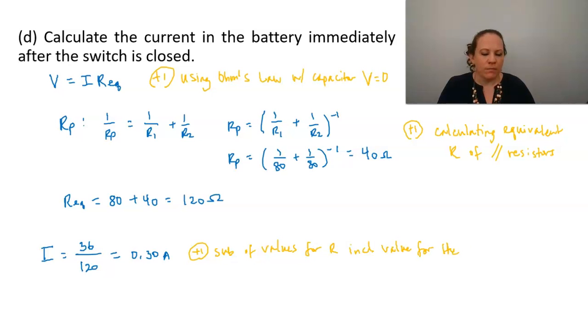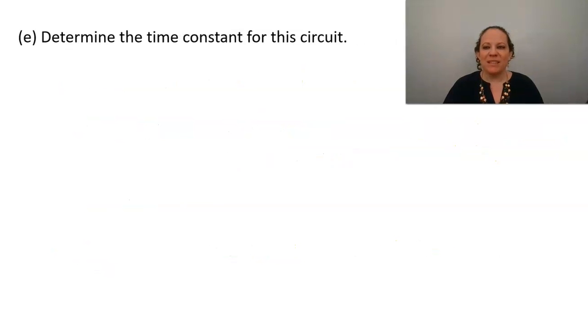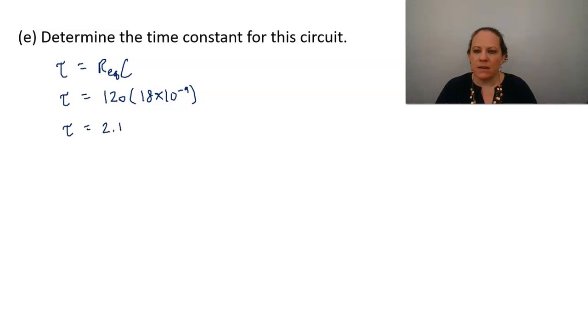The time constant for this circuit part d. So we're going to remember of course that the time constant tau for this circuit will be equal to the equivalent resistance of the circuit times the capacitance so that's going to be the 120 ohms we just found times the 18 nanofarads and we get 2.16 microseconds.